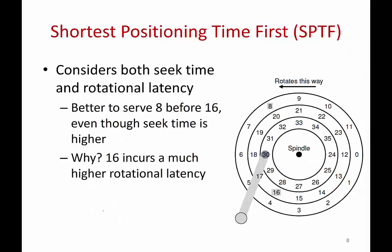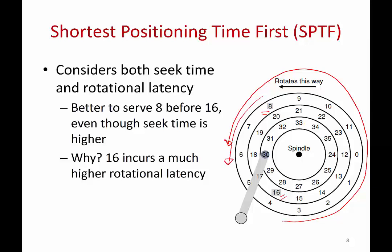Both SSTF and SCAN only consider seek time, not rotational latency. Another algorithm, Shortest Positioning Time First (SPTF), considers both. For example, if the disk head is at sector 30 with options to serve request 16 or request 8: request 16 has a lower seek time (just one track away) but a large rotational latency, whereas sector 8 has a longer seek time but much smaller rotational latency. SPTF computes over both seek time and rotational latency, and serves whichever sector can be reached fastest overall.